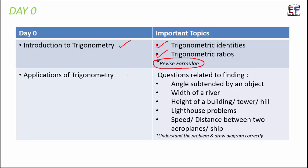In Applications of Trigonometry, you generally get word problems such as finding angles subtended by an object, width of a river, height of a building, tower or hill, lighthouse problems, and speed or distance between aeroplanes or ships. These kinds of problems are often asked. The most important trick is to understand the problem and draw the diagram correctly — if you have drawn the diagram correctly, half the battle is won.